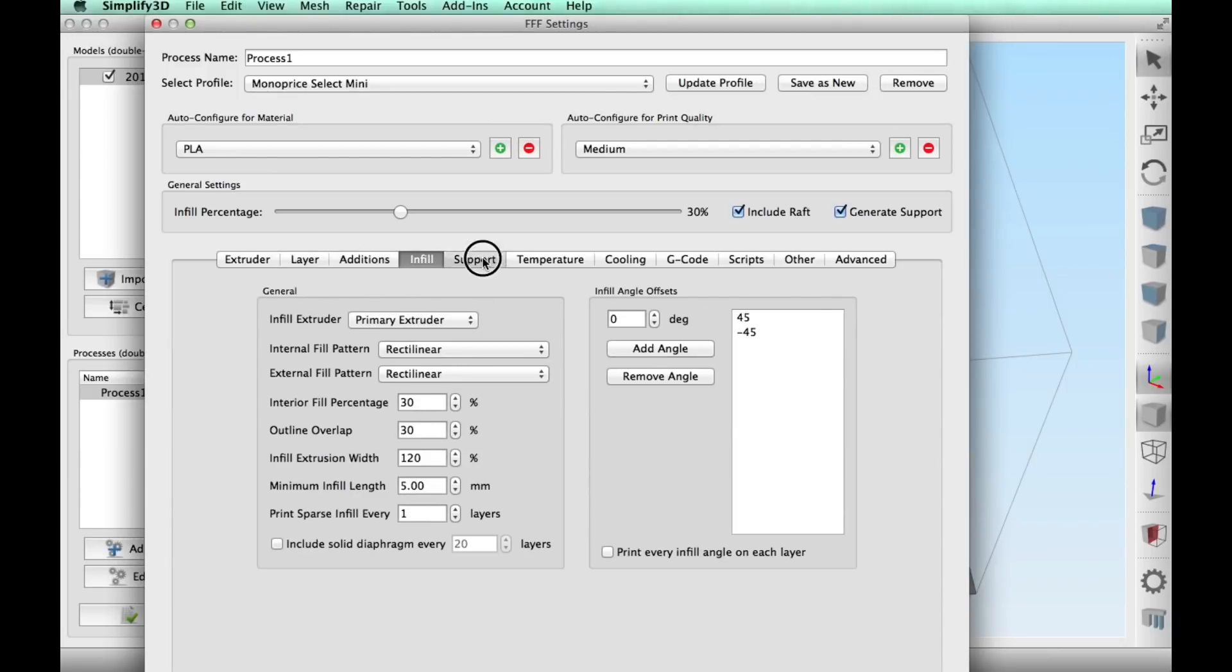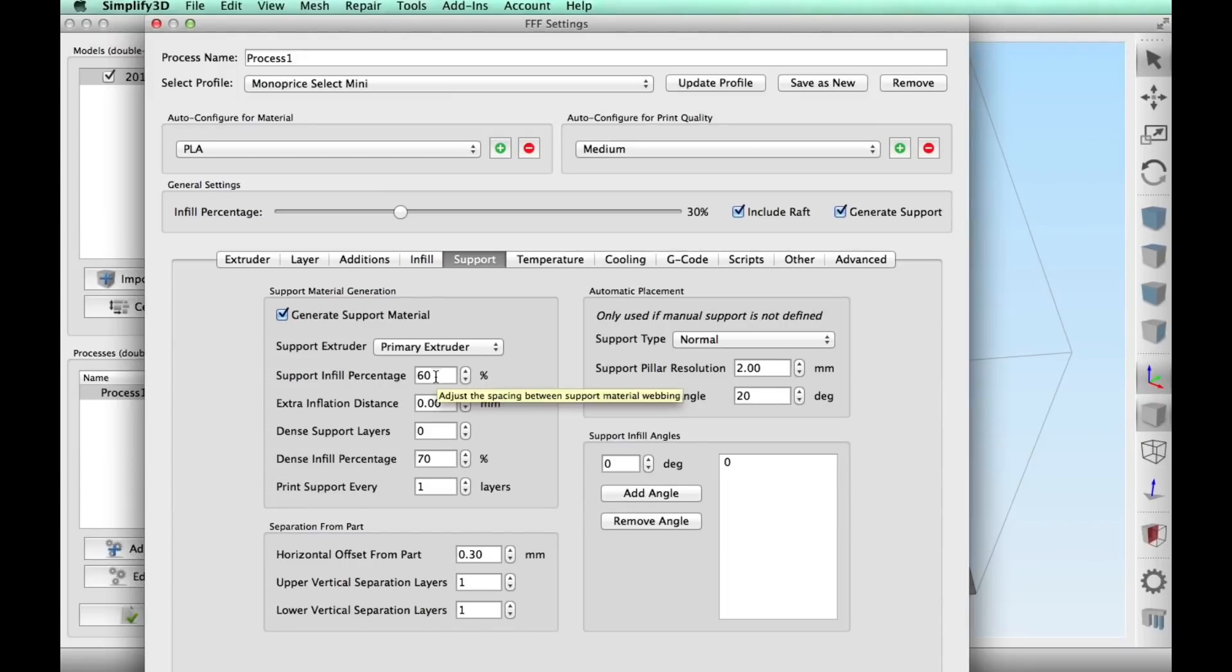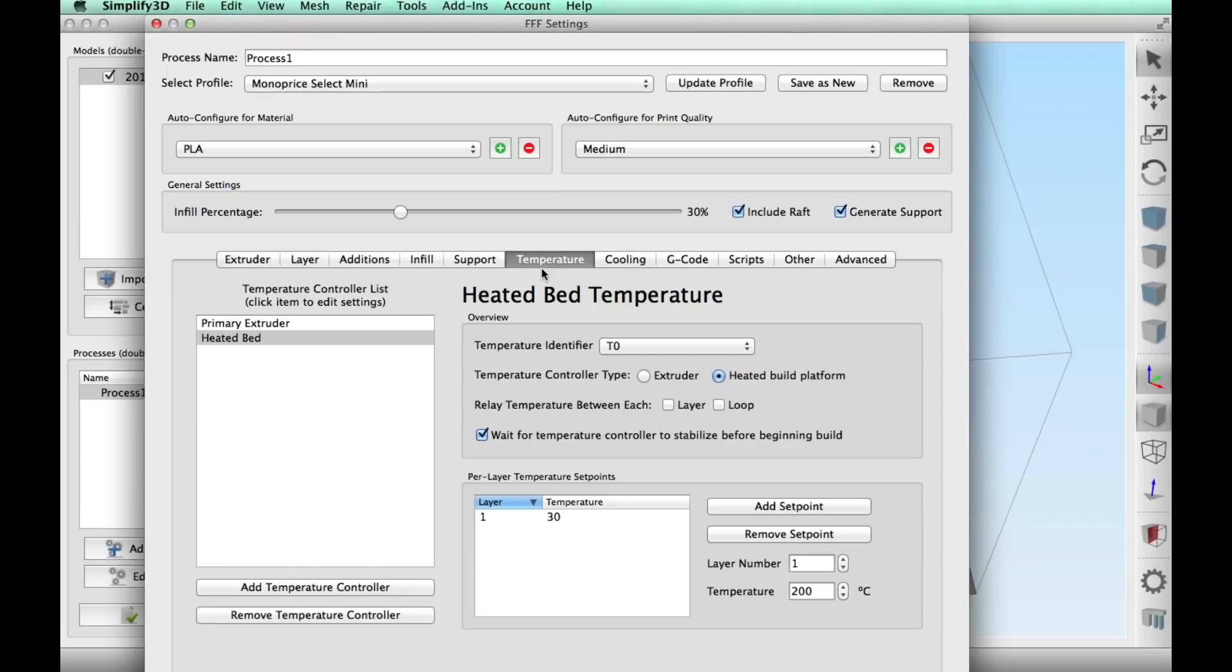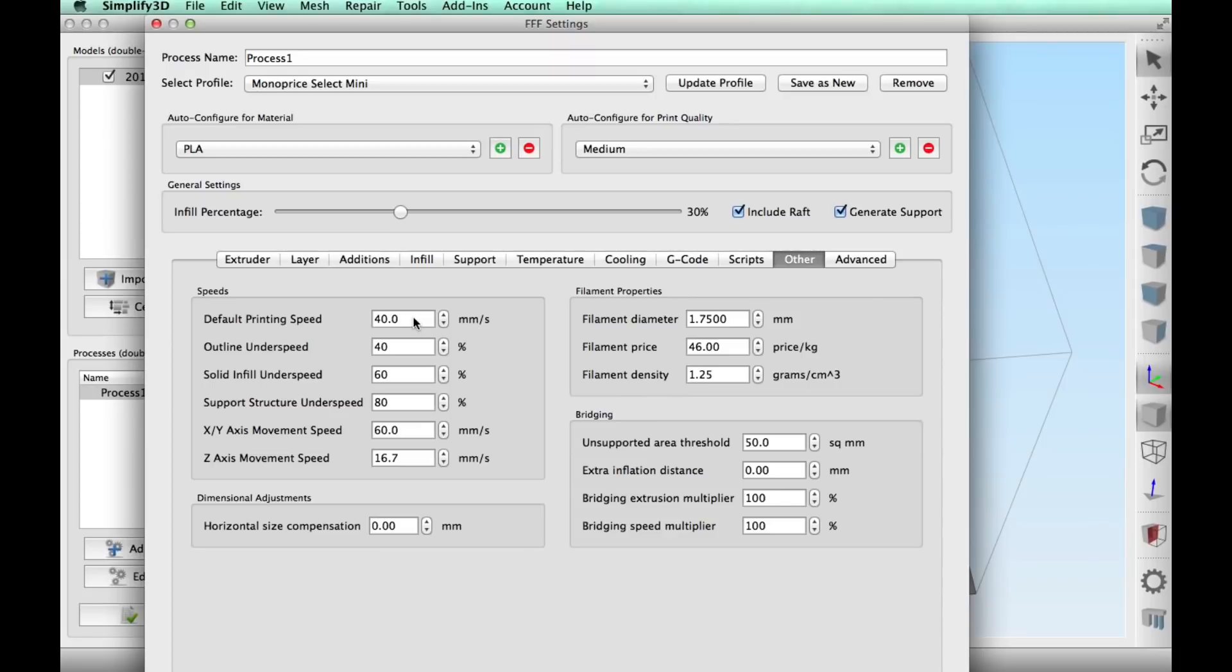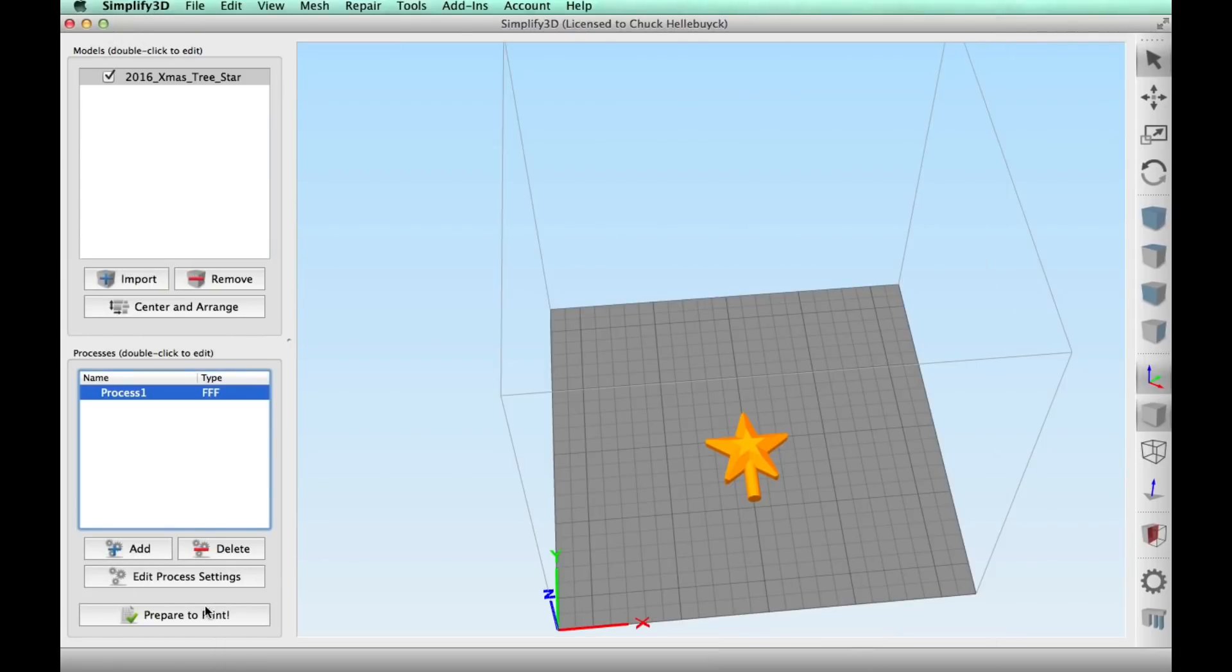So I did enable raft and the additions support. Here's what I modified a little bit: I used a 2 millimeter resolution and a 20 degree angle because it wasn't working otherwise. Normal temperatures, fan on, and 40 millimeters per second.